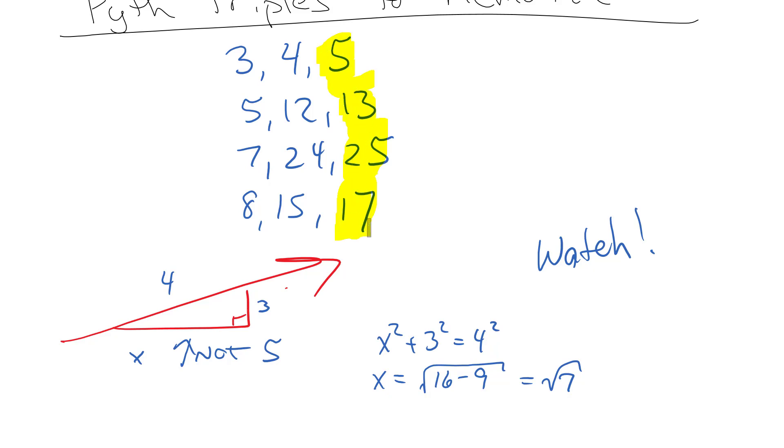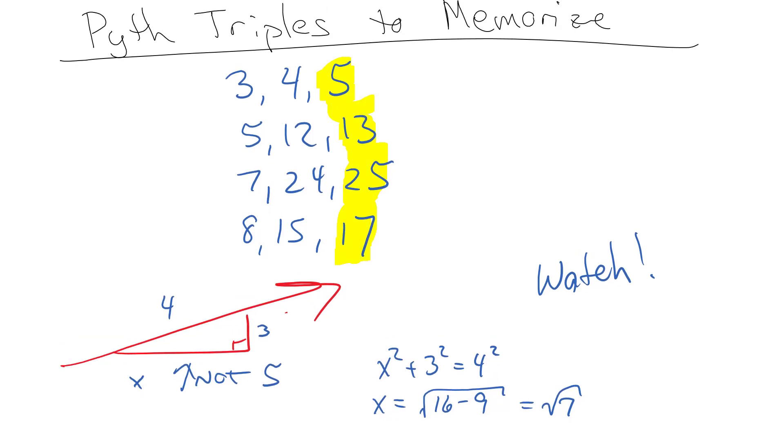Now if anyone ever asks you, give me like three Pythagorean triples, they're looking for three unique ones. So you can't go 3-4-5, 30-40-50, 300-400-500. If they're asking you for Pythagorean triples, you should say like 3-4-5, 5-12-13, 8-15-17, 7-24-25. Those just need to roll off the tongue kind of like the alphabet. Definitely these are some basic Pythagorean triples to know and to just be able to recognize them when you see them out in the field.